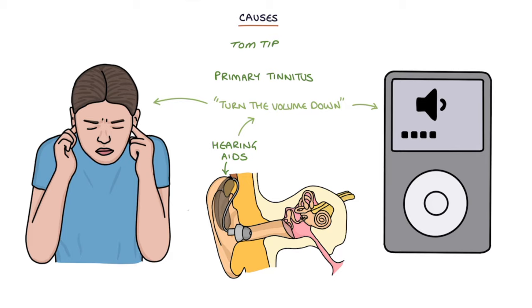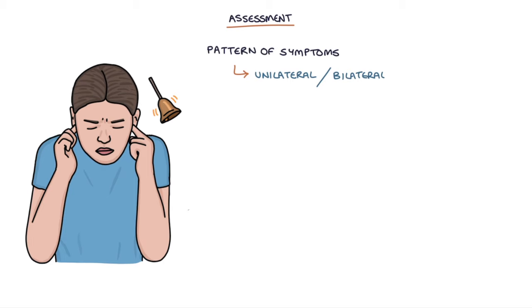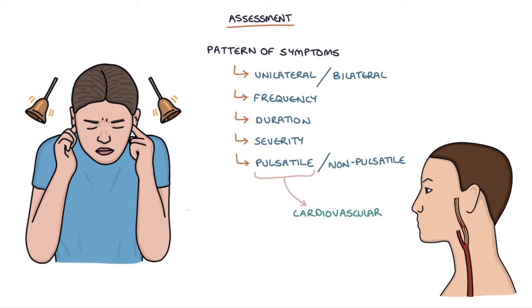Next let's talk about assessment of somebody who has tinnitus. Ask about the pattern of symptoms, whether it's unilateral or bilateral, the frequency and duration of symptoms, the severity, and whether the sound is pulsatile or non-pulsatile. Pulsatile sounds indicate a cardiovascular cause, such as carotid artery stenosis, with a bruit.